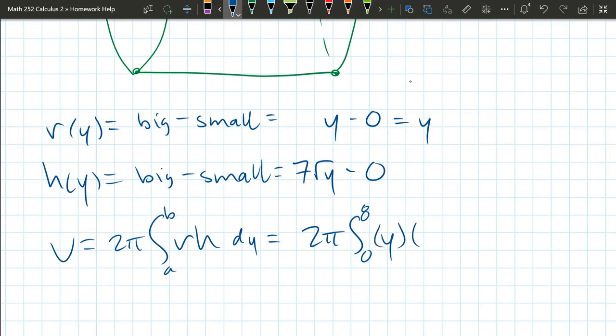So our radius is y. Our height is 7√y. And dy.